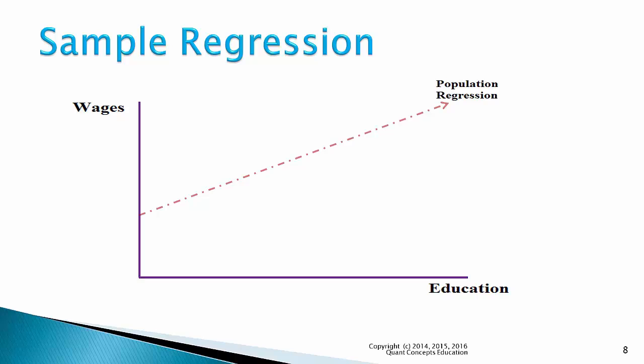However, we can estimate the population regression line with our sample regression line. That is, we take a random sample of individuals from the population, say 50 people, and record their wages and education values and estimate the sample regression.